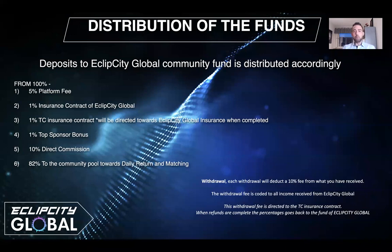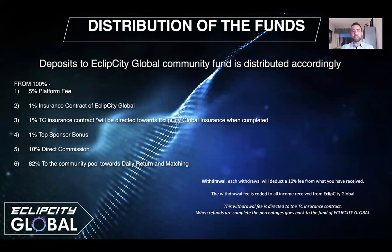When withdrawing income — whether daily 1%, direct commission, matching bonus, or top sponsor bonus — there is a 10% withdrawal fee deduction. This is not a fee; it is a give-back. This withdrawal fee goes first to the Tron Chain insurance contract so that process moves faster. Once all Tron Chain refunds have been claimed at 100%, that percentage goes back into the Eclipse City Global fund.